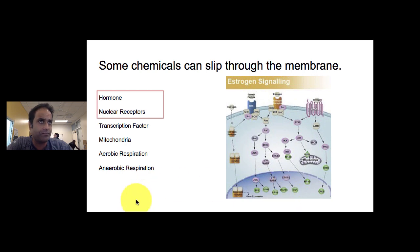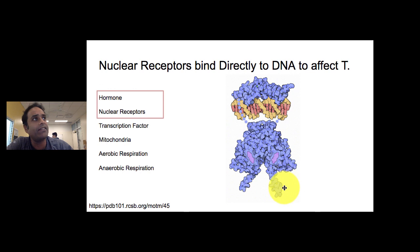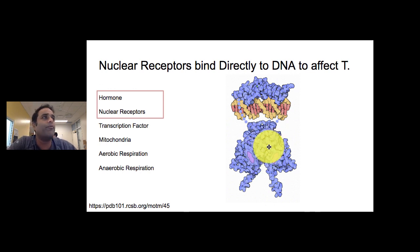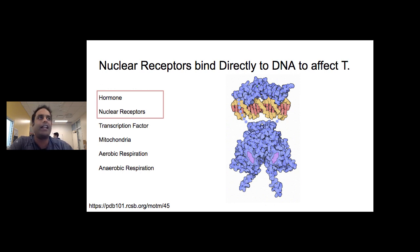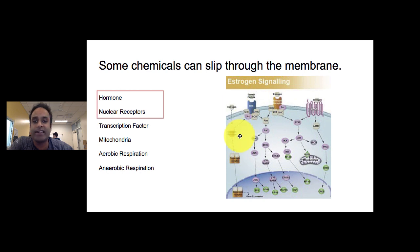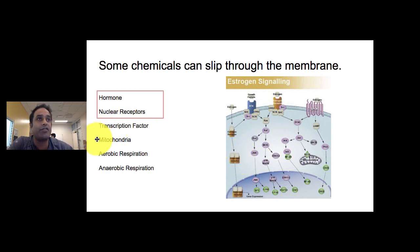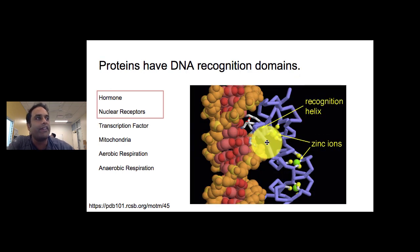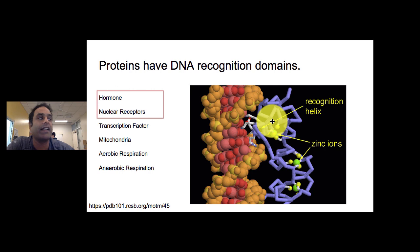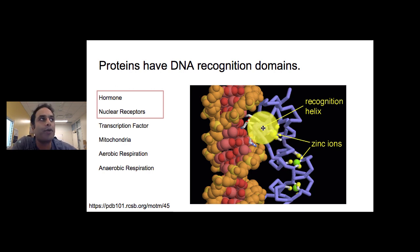Once bound to estrogen, the estrogen receptor goes directly to DNA and affects transcription. The difference between a nuclear receptor and a regular receptor is that a nuclear receptor binds something that comes into the cell, whereas a regular receptor binds something on the outside. Nuclear receptors generally travel directly to DNA and affect transcription. Specifically, the part of the protein that binds to DNA is called a zinc finger.